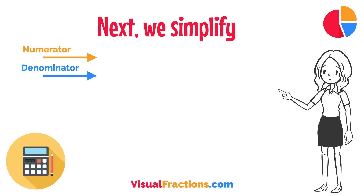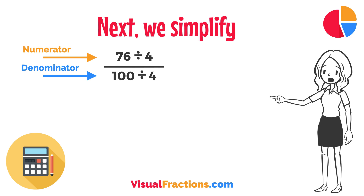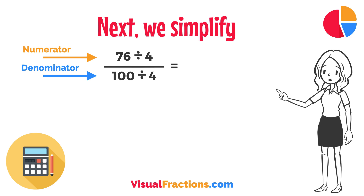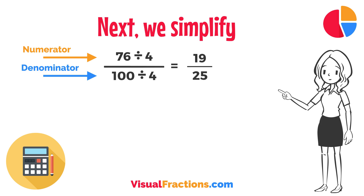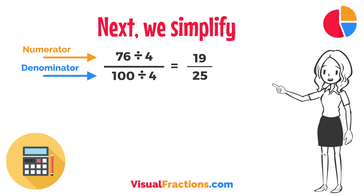Next, we simplify. Both the numerator and the denominator in 76/100 are divisible by 4, the greatest common divisor. Divide 76 by 4 to get 19 and divide 100 by 4 to get 25. So, 76/100 simplifies neatly to 19/25.